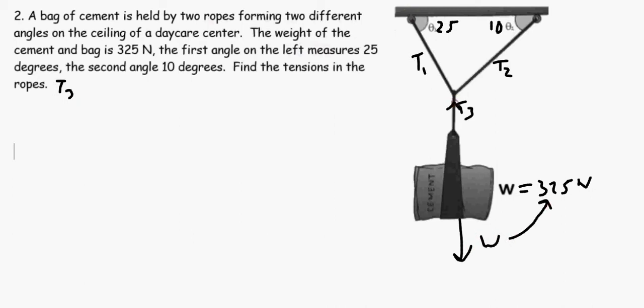T3 is pulling straight up onto the weight, so if we have the weight acting down which is 325 Newtons, T3 must be pulling straight up with that exact same force. So T3 is easy, that's 325 Newtons. What we really care about are what T1 and T2 are.